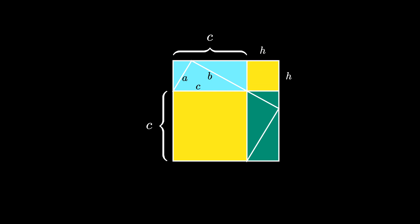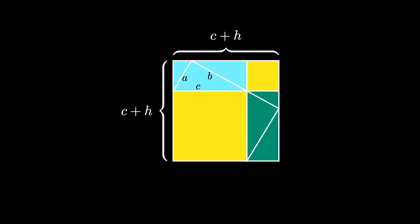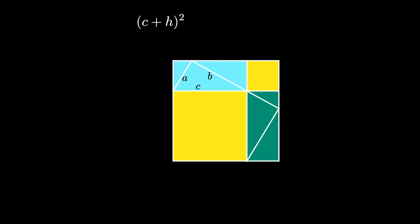The full diagram that we have just created is a square with a side length of C plus H. Therefore the area contained in this square is the quantity C plus H squared.